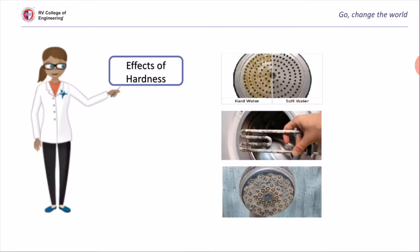Effects of hardness: Domestically, presence of hardness-causing substances leads to wastage of soap. In industry, in boilers there is formation of scales which corrode the boilers — in other words, wastage of fuel also takes place. Even in some pipes there is blockage due to deposition of salts, which leads to corrosion. In the textile industry, during the dyeing process, calcium and magnesium salts present in the water contaminate the quality of shading.